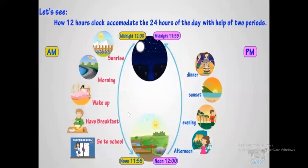We need to discuss this picture. All of you know that there are 24 hours in a day. These 24 hours are divided into two parts: 12 on one side and 12 on the other side. This side is night time and this side is day time. Whenever it is 12 o'clock at night, this is called 12 midnight. After midnight, the sun rises and morning comes.